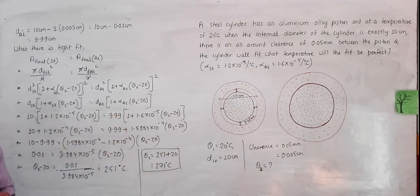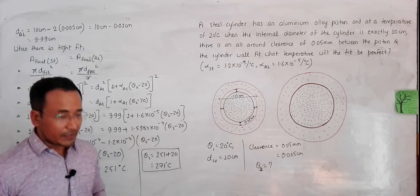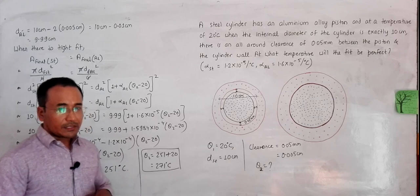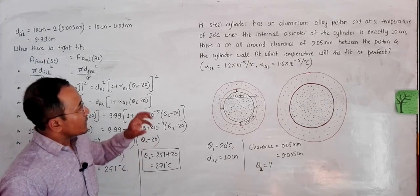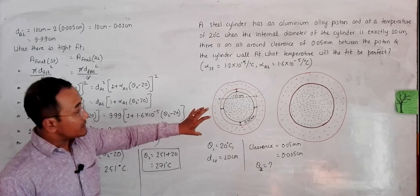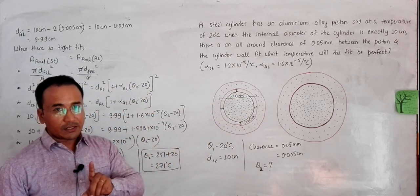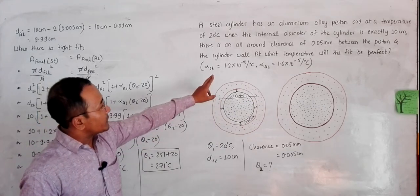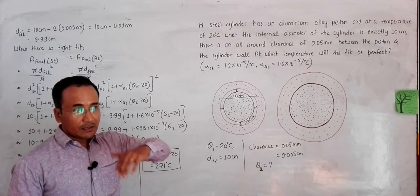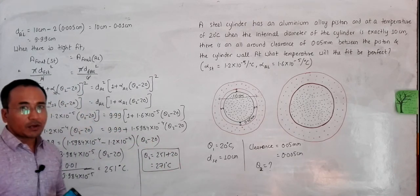The arrangement will be a perfect fit at 271°C. This is possible because the aluminum piston, whose initial diameter was smaller, expanded more vigorously than the steel cylinder due to its higher expansivity. More expansivity means more expansion — that is why the perfect fit was achievable.